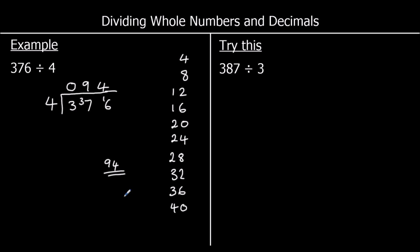Here's a question for you to try — pause the video and give it a go. So we've got 387 divided by 3. So 3 on the outside, 387 on the inside, and I'm going to write down my 3 times table.